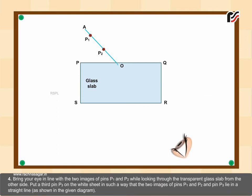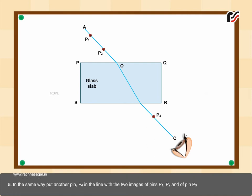Bring your eye in line with the two images of pins P₁ and P₂ while looking through the transparent glass slab from the other side. Put a third pin P₃ on the white sheet such that the two images of pins P₁ and P₂ and pin P₃ lie in a straight line as shown in the diagram. Similarly, put another pin P₄ on the line with the images of pins P₁, P₂, and pin P₃.